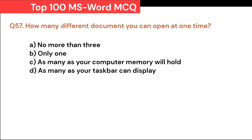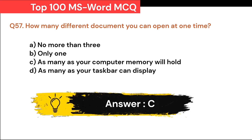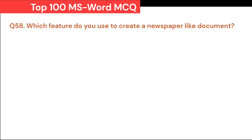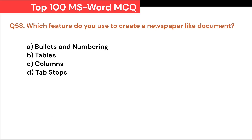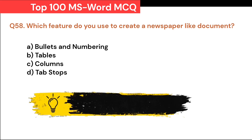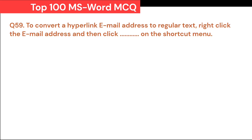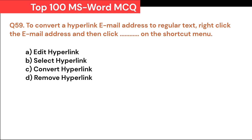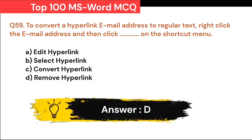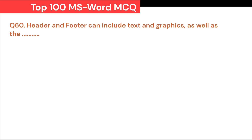How many different documents can you open at one time? A. No more than three. B. Only one. C. As many as your computer memory will hold. D. As many as your taskbar can display. Correct answer is C. As many as your computer memory will hold. Which feature do you use to create a newspaper-like document? A. Bullets and numbering. B. Tables. C. Columns. D. Tab stops. Correct answer is C. Columns. To convert a hyperlink email address to regular text, right-click the email address and then click Dash on the shortcut menu: A. Edit Hyperlink. B. Select Hyperlink. C. Convert Hyperlink. D. Remove Hyperlink. Correct answer is D. Remove Hyperlink.